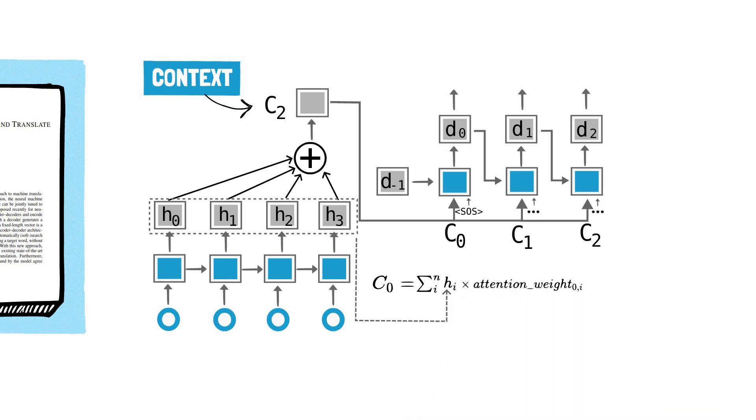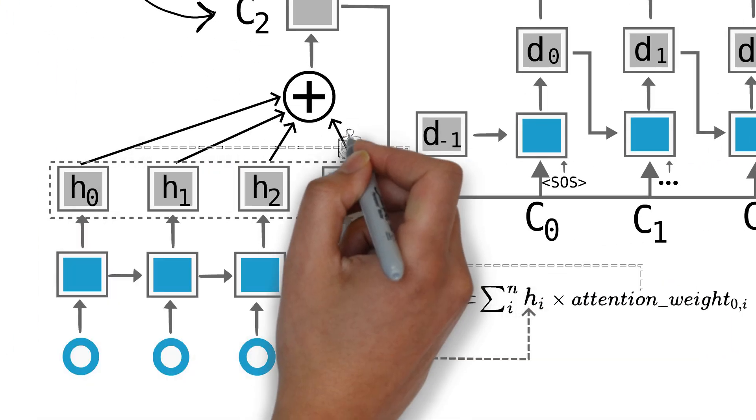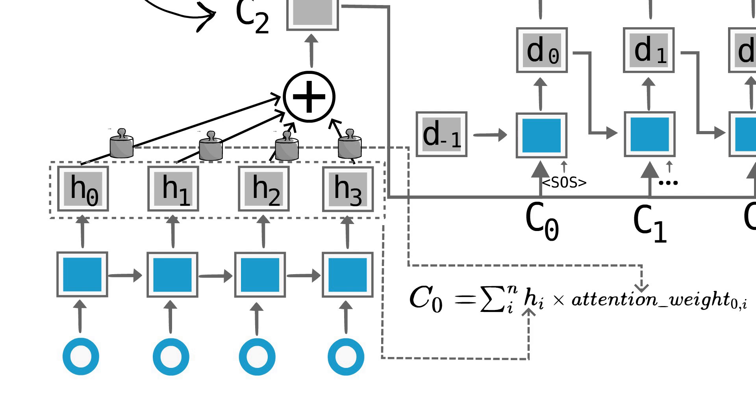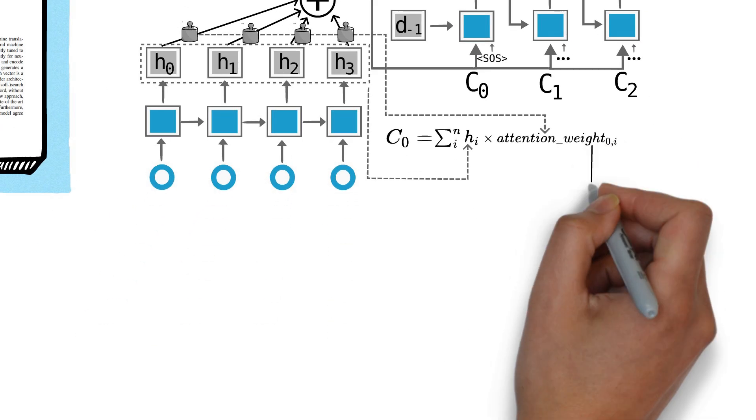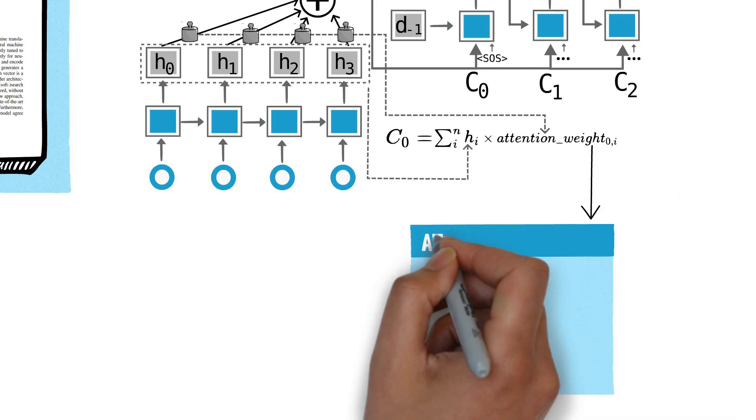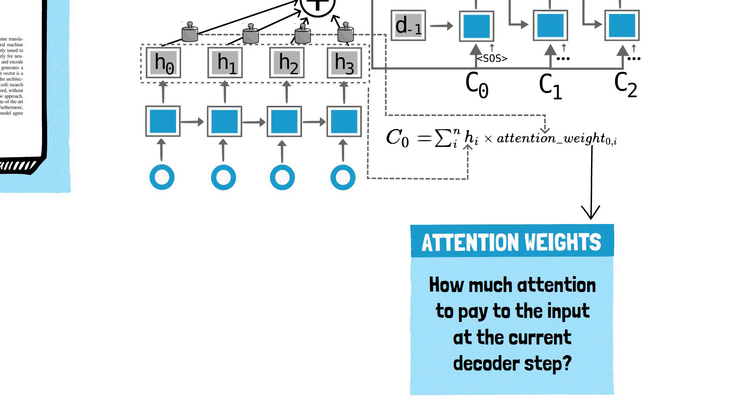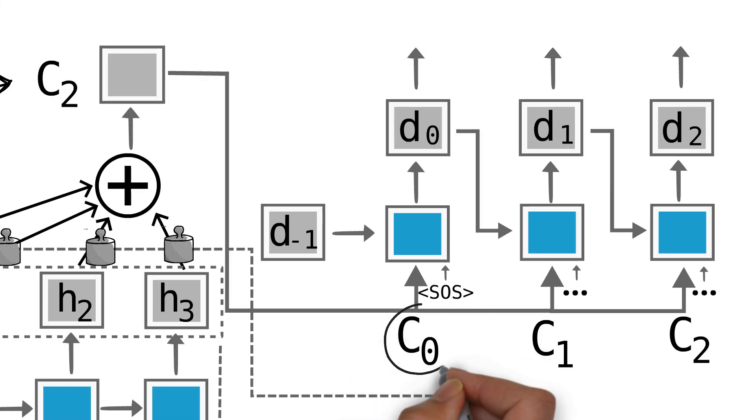The attention mechanism functions by assigning a relevant score or weight to each encoder hidden state. These weights determine how much attention the decoder should pay to each part of the input sequence when producing a particular word at that decoder step.